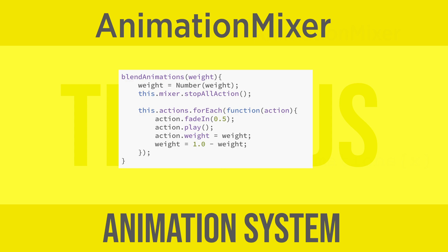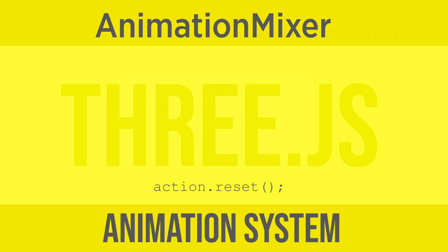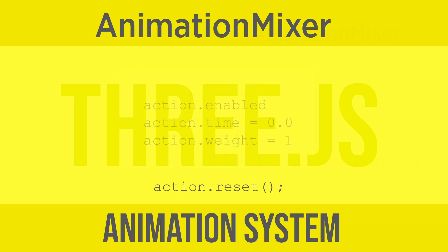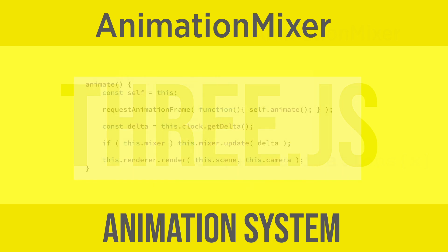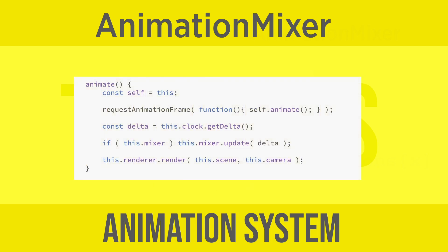If you want an action to always start from time 0, also call reset, which ensures that the action is enabled, its time is set to 0, and its weight is set to 1. When using animation mixers, in your requestAnimationFrame event, you'll want to update the animation mixers based on the delta time that's elapsed since the last frame was called.